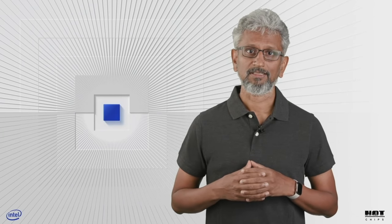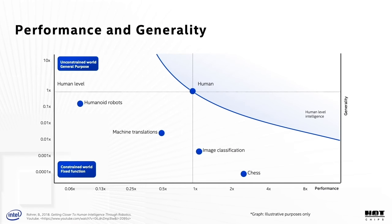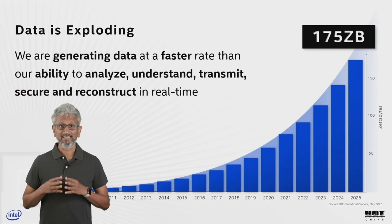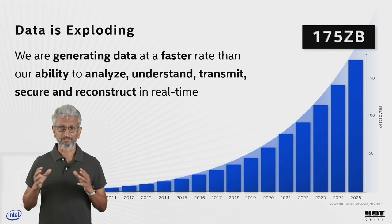There is another thing about intelligence that makes it even harder: it needs both performance and generality. The key callout is the distinction between constrained versus unconstrained world and fixed function versus general purpose. What makes our pursuit of intelligence super hard is that not only do we need more compute at a faster pace than ever, we also need it to be general purpose. And we are making it even harder.